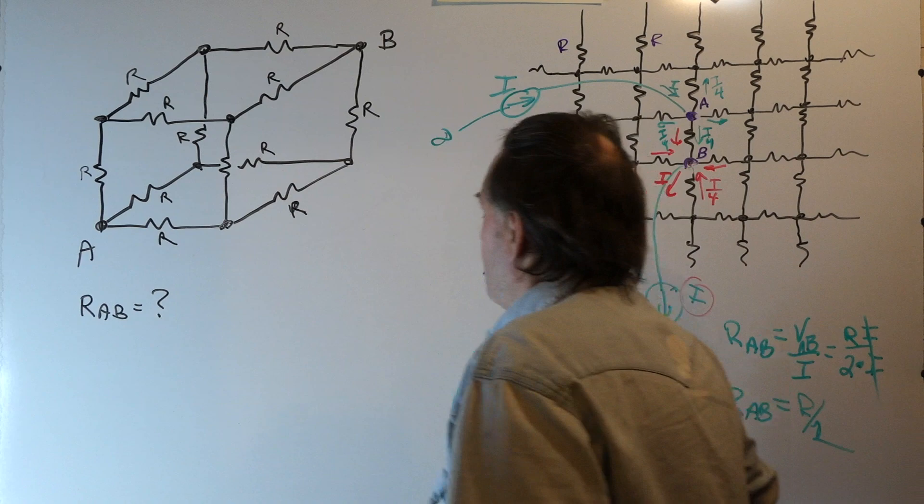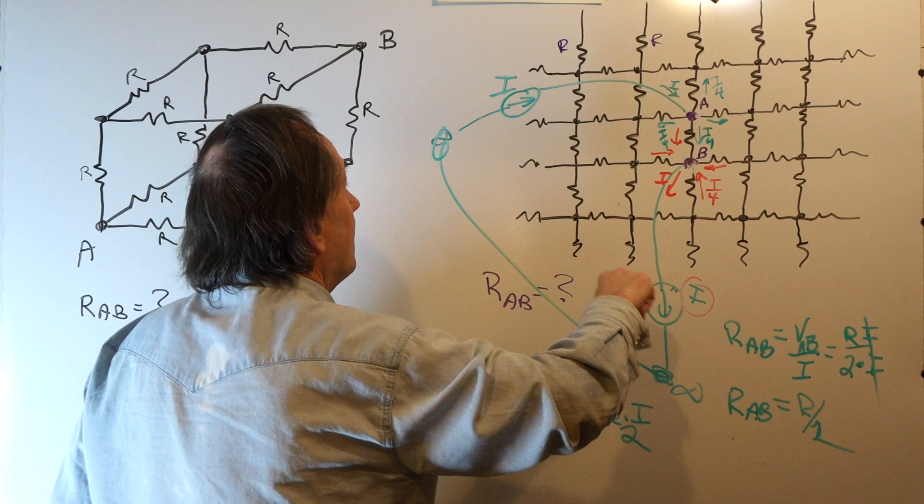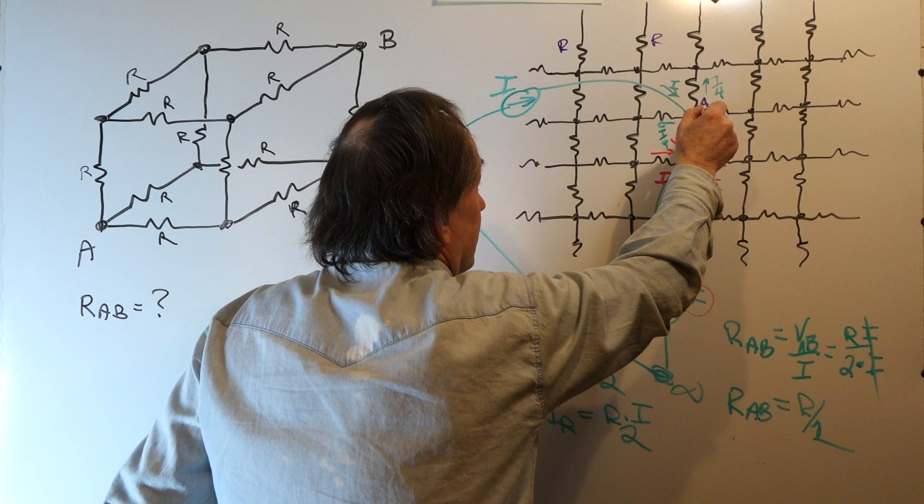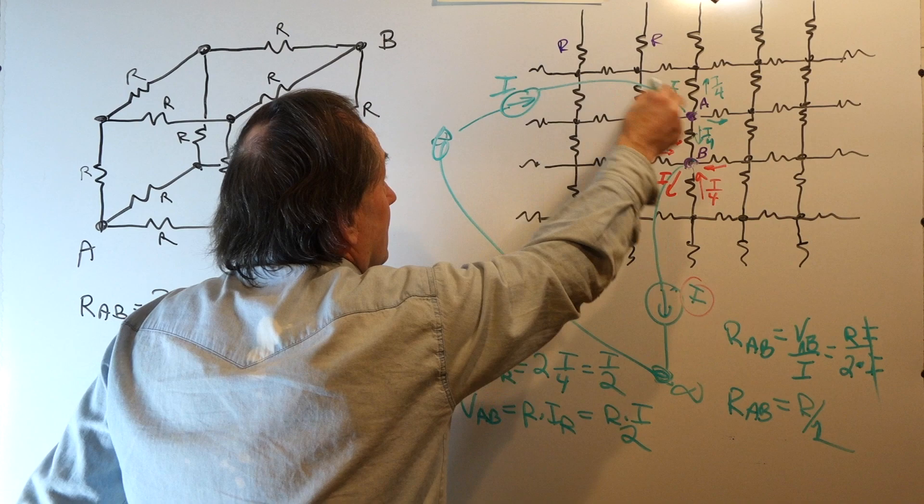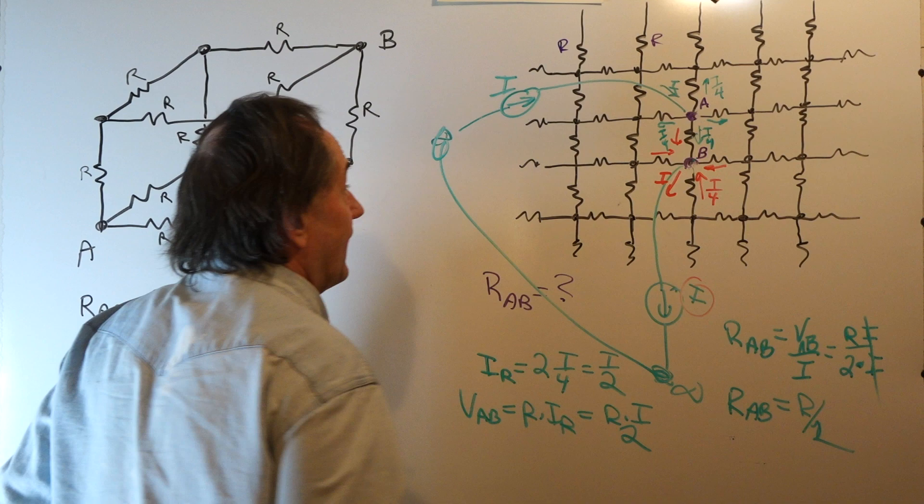Basically, what we have going here is I can connect these two current sources out at infinity. We're sourcing a current I in and pulling the current I out, and we use superposition to get the total current flowing between A and B in this resistor, which is just one-fourth of the current on each current source, and we have two of them. One due to this current source puts in I over four. This one pulls out I over four, so we have I over two in the resistor, and hence we can get the total resistance.